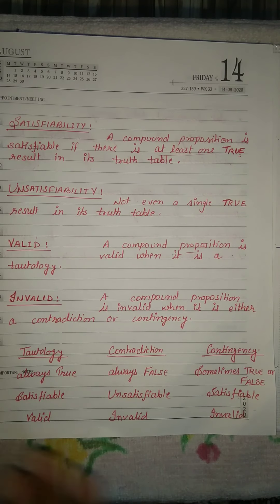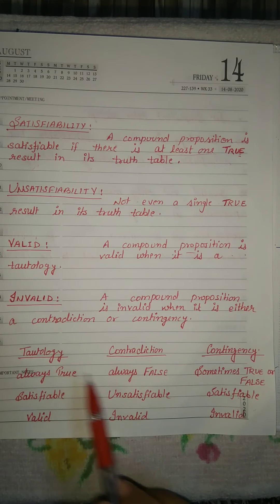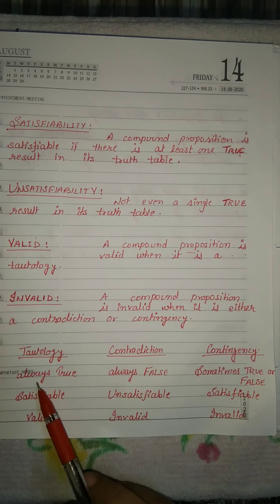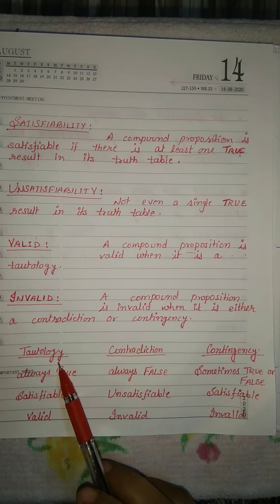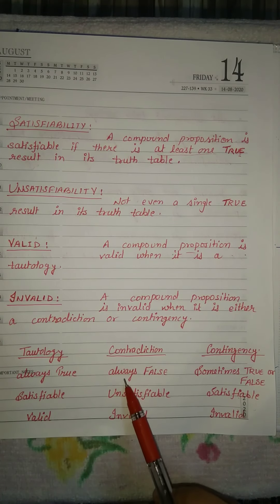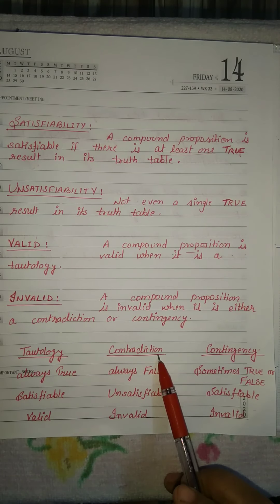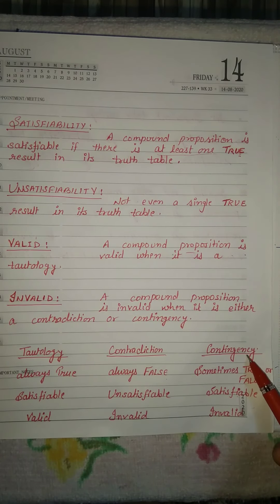Here is a summary: tautology means always true, contradiction means always false, and contingency means sometimes true and sometimes false.